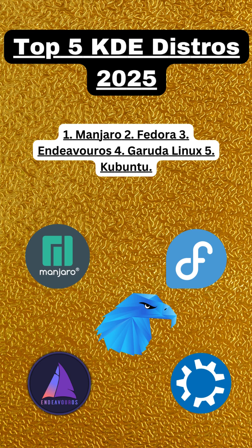1. Manjaro KDE Edition — Manjaro, based on Arch Linux, provides a user-friendly experience with its KDE edition. It offers a rolling release model, ensuring users have access to the latest software updates and features.